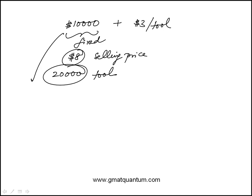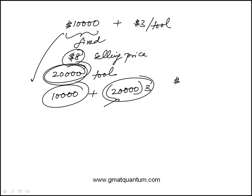So the cost to produce 20,000 tools would be $10,000 plus 20,000 tools times $3, because that's the cost to produce each tool, that's $60,000 plus $10,000, that's $70,000.